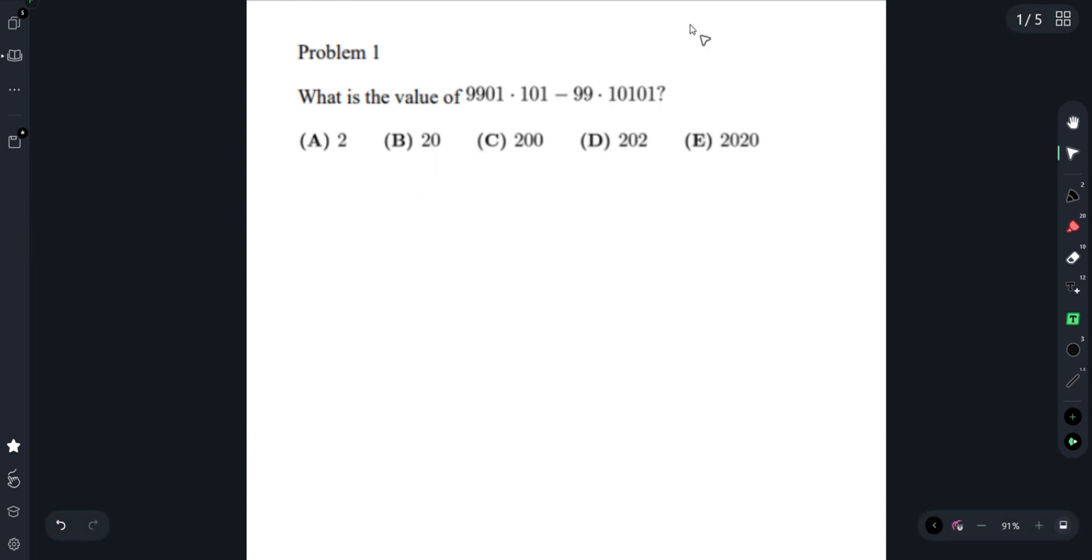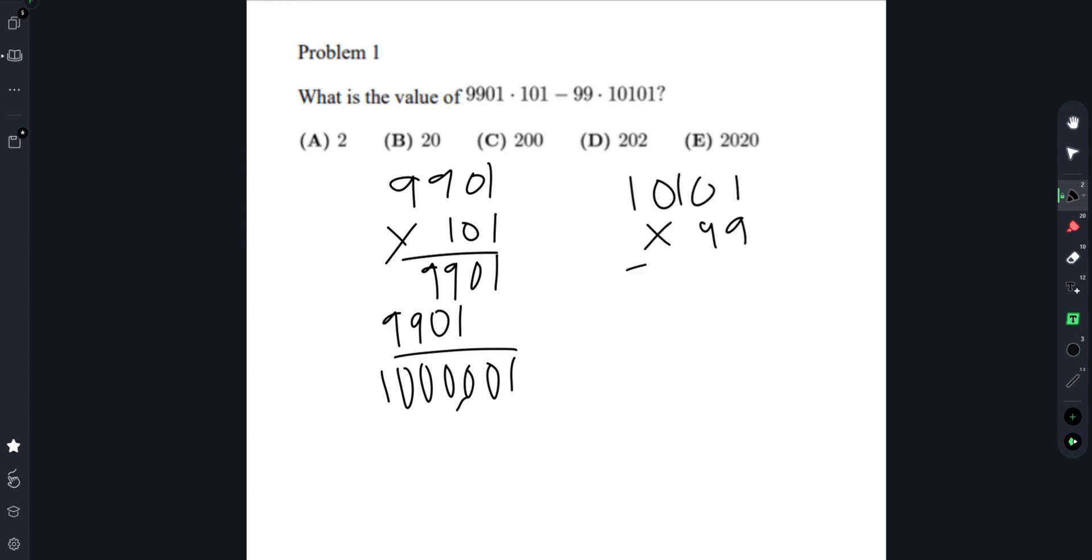Problem 1: what is the value of 9901 times 101 minus 99 times 10101? We're going to do some quick math. 9901 times 101, which is 9901 plus 990100. Now adding this up, we get 1,000,001. Then we get 10101 times 99, which is 999,999. Subtracting these, we get 2.